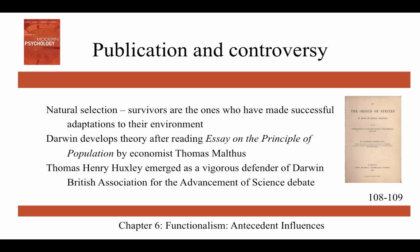There was a lot of controversy about On the Origin of Species. Darwin's central idea is natural selection — that survivors are the ones who have made successful adaptations to their environment, and species that cannot adapt do not survive. He developed this theory after reading Essay on the Principle of Population by economist Thomas Malthus. The Malthusian idea is basically that there isn't enough food to go around, so most people live under near-starvation conditions, and only the most forceful, cunning, and adaptable will survive.